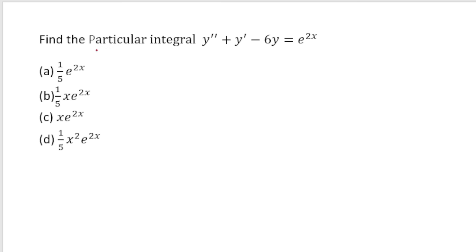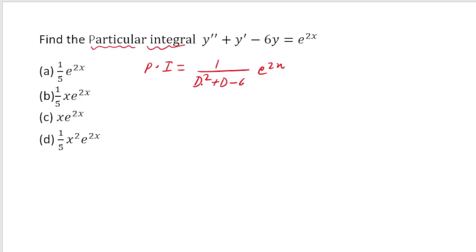The next few problems are related to finding PI only. Here PI = 1/(D²+D-6) operating on e^(2x). If I put D = 2 directly, I get 4+2-6 = 0, so the direct formula cannot be applied. This is an important kind of problem — a case of failure — usually asked in exams.